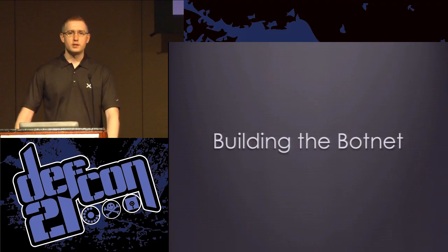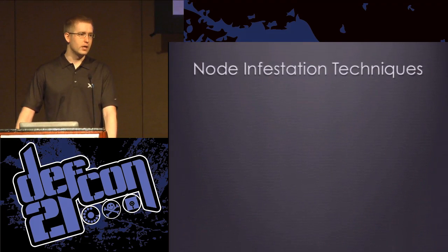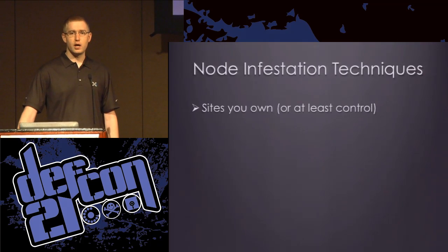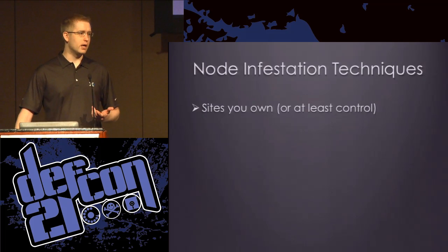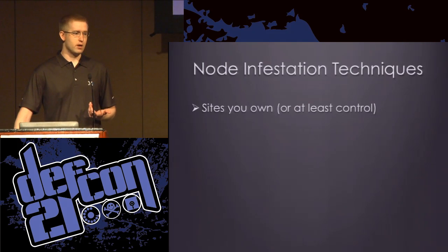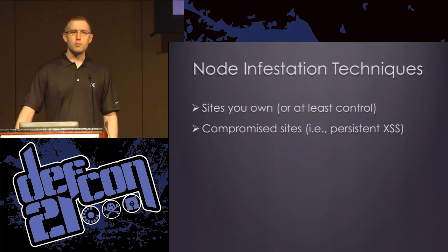So let's look at what it takes to actually build a botnet on top of web browsers. The first step in building any botnet is node infestation — how do we actually get our code running on the node and take control of it? The first and most obvious technique is to simply use a site that you own. If you own a site getting a thousand hits every five minutes, you have the capability to execute whatever code you want on a thousand different web browsers every minute. Most sites don't do anything with that, but there's definitely the potential there.